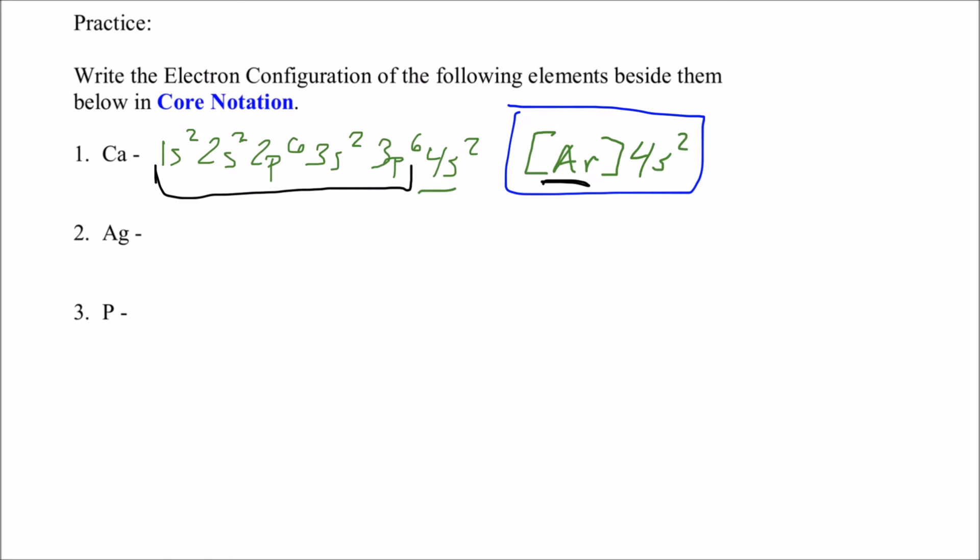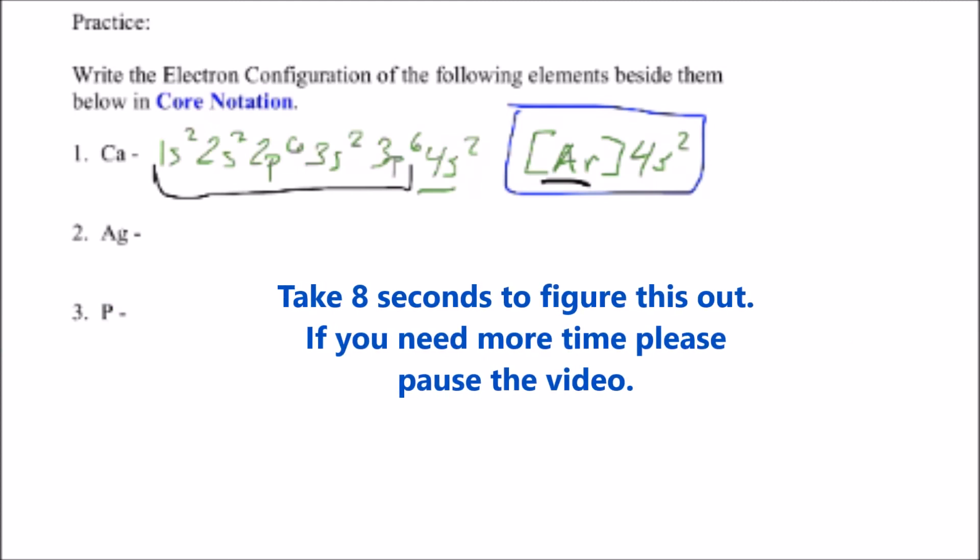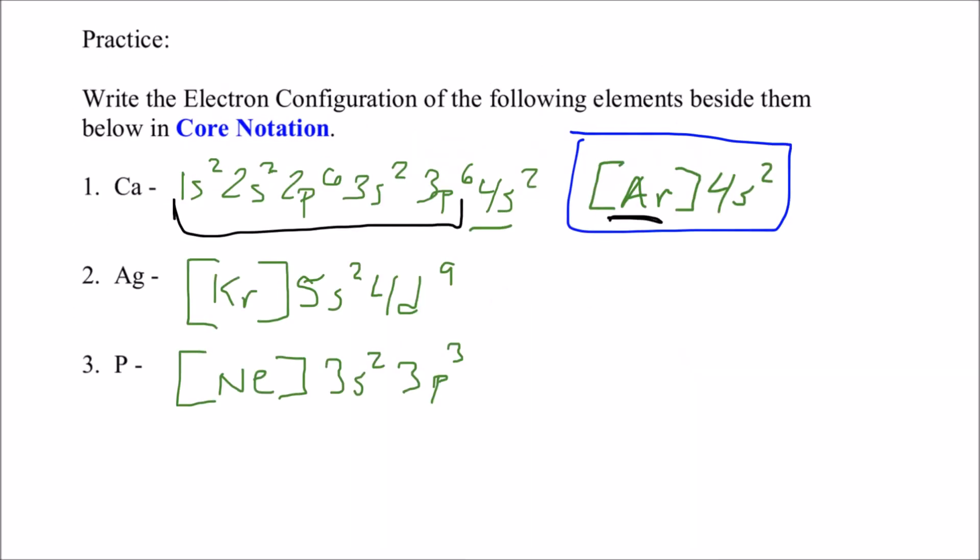I want you to see if you can do silver and phosphorus. You do not need to write out the electron configuration. You can just write the core notation. Here are the core notations or noble gas notations for silver and phosphorus. We have krypton in brackets, and then 5s2, 4d9. And then for phosphorus, we have neon in brackets, 3s2, 3p3. So hopefully you came up with both of those.